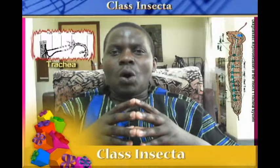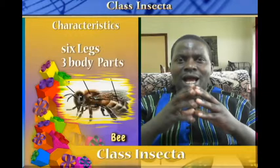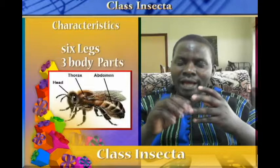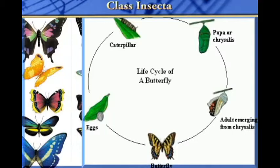All organisms in class Insecta have six legs — that is, they have two or three pairs of legs. Their body parts are divided into three sections: they have the head, the thorax, and the abdomen. All organisms in class Insecta have either four-stage or three-stage life cycles.